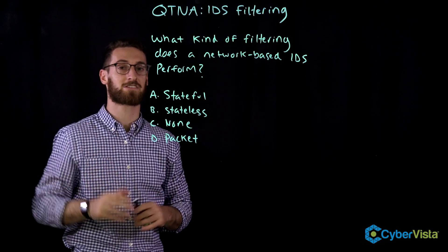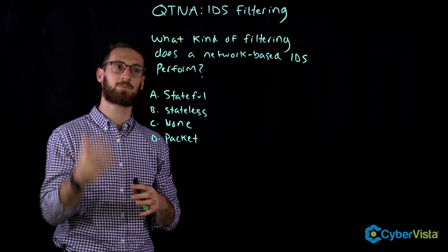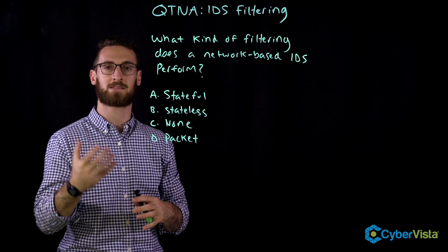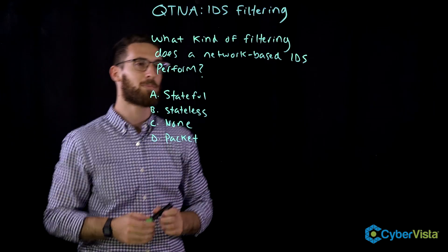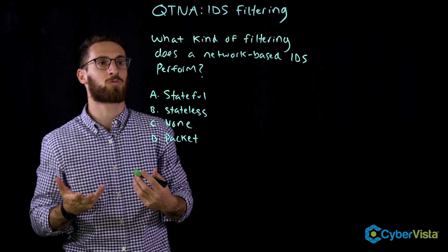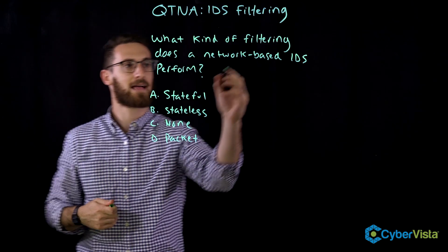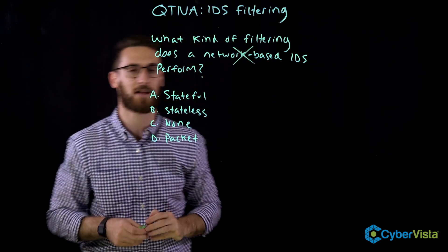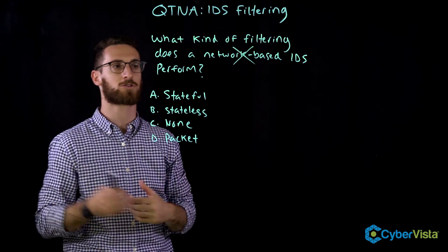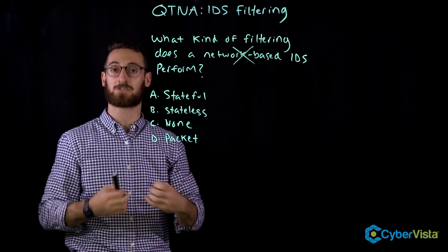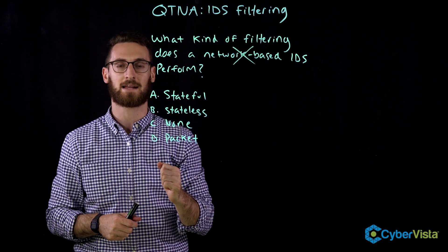When you get to a tricky question, a good first step is to make the question a little bit easier. You do that in two ways: first, eliminate things from the question that aren't helpful or are a distractor. If I want to reword this question in my own words, it's asking: what kind of filtering does the IDS perform? The information about where you place the IDS — on the network, in a host, or somewhere else — isn't relevant, because that doesn't change the function of the IDS. So let's simplify it to: what kind of filtering does the IDS perform?